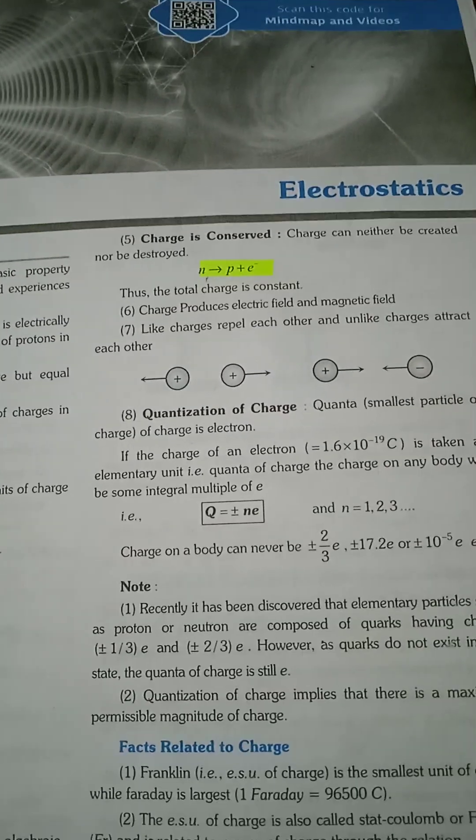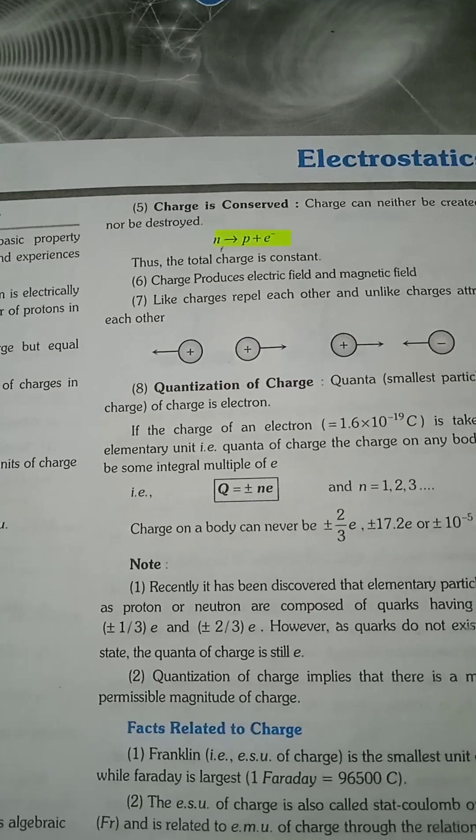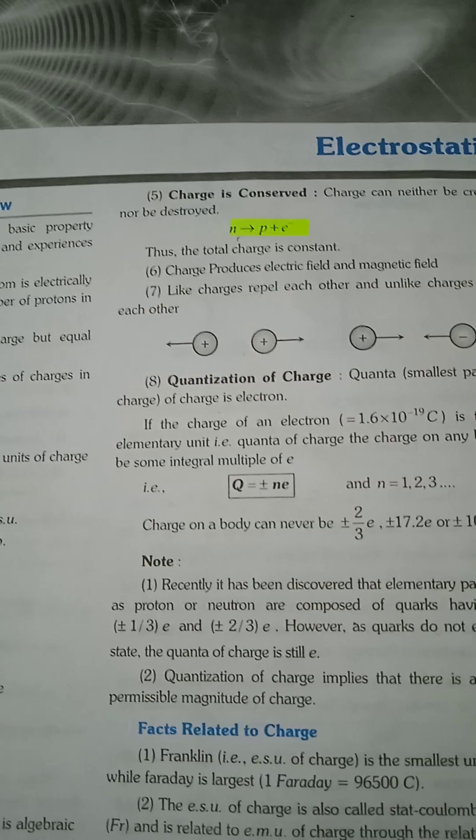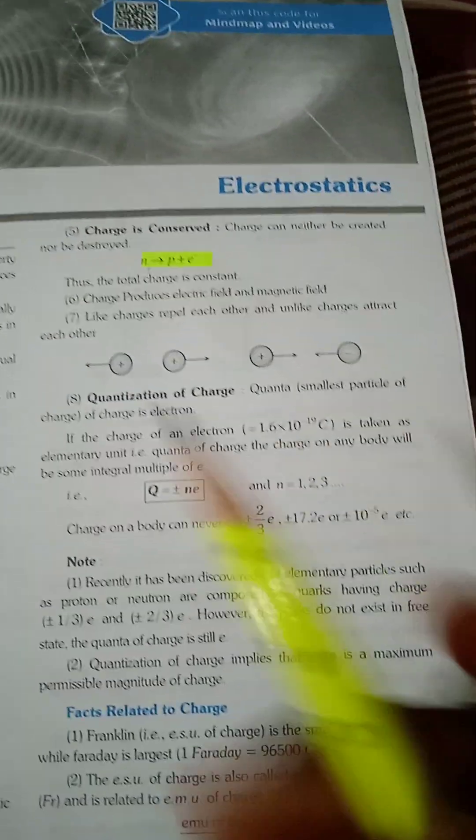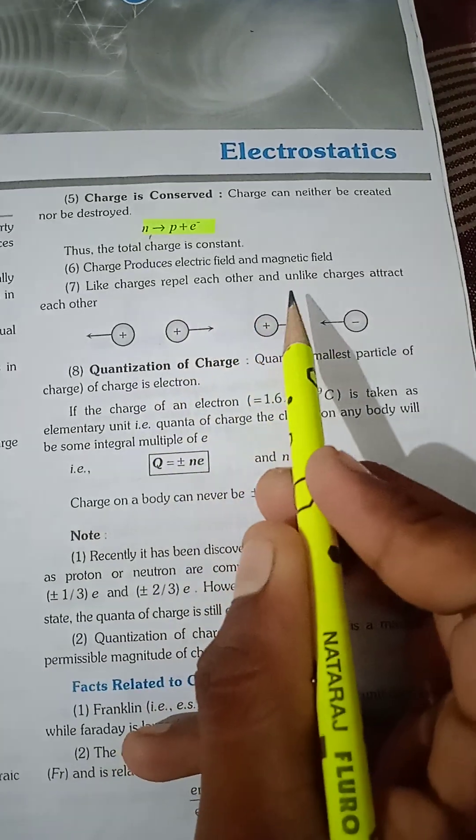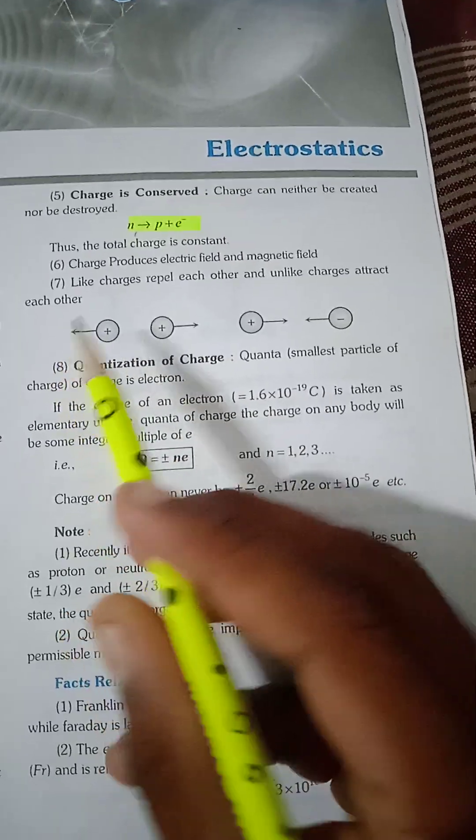The charge produces electric field and magnetic field. Like charges repel each other and unlike charges attract each other.